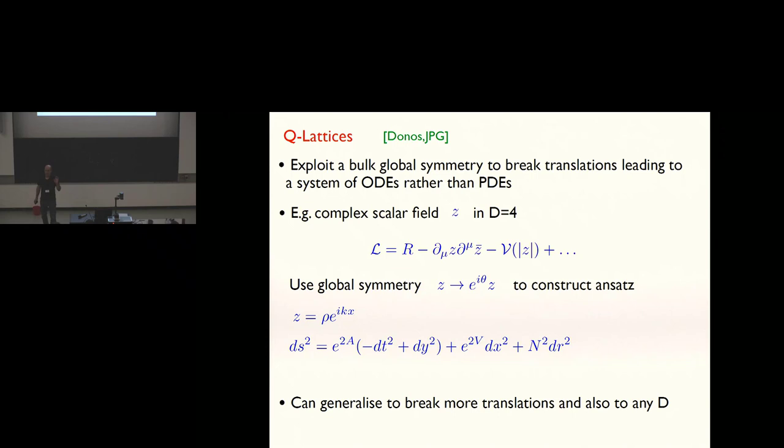It's good to look for interesting ways where you simplify that problem to solving ordinary differential equations. So these are toy models that have been very useful in teasing out what's going on. The Q lattice just simply exploits the possibility that you have a bulk global symmetry, not a bulk gauge symmetry, a bulk global symmetry.